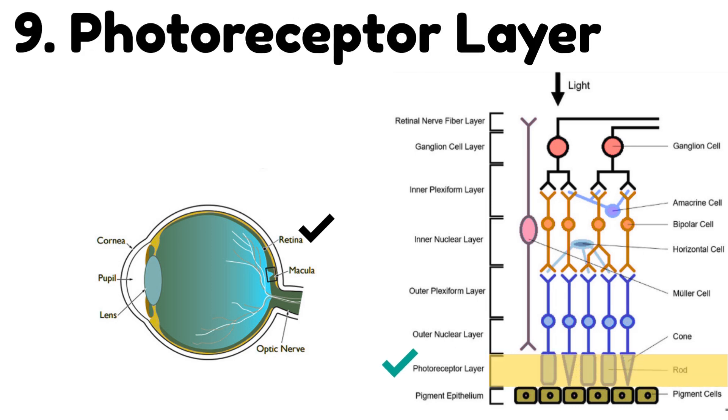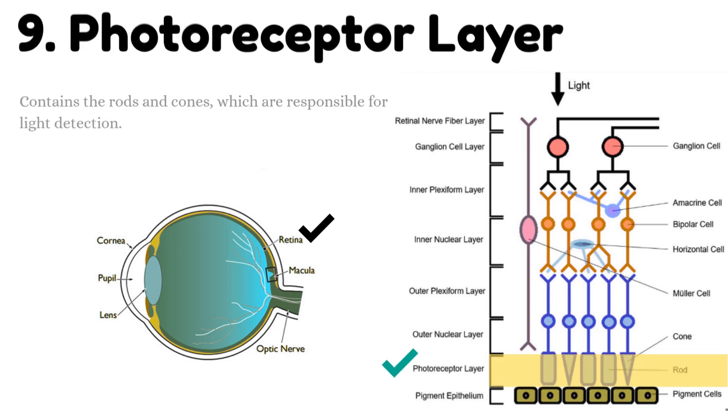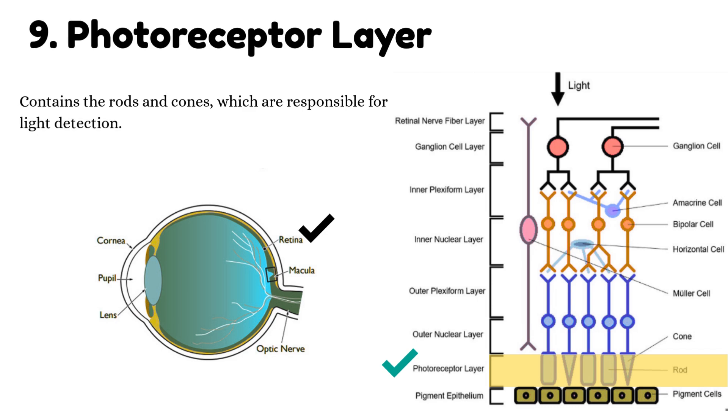Number 9: Photoreceptor layer. This layer contains the rods and cones, which are responsible for light detection.